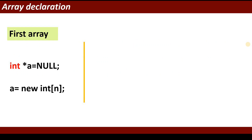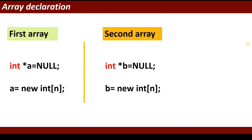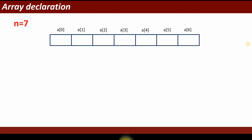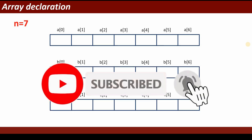To declare the arrays dynamically: the first array is declared as int pointer a equal to null, then a equal to new int of n, where n is the number of elements. The second array is int pointer b equal to null, then b equal to new int of n. The third array is named c and is also a dynamic array declared the same way.